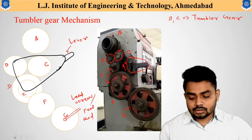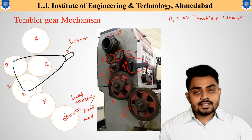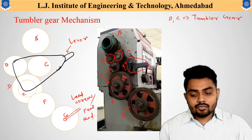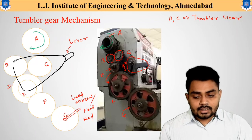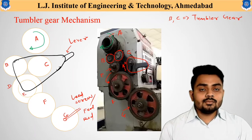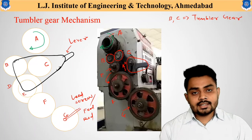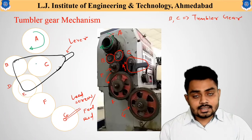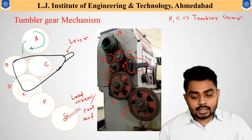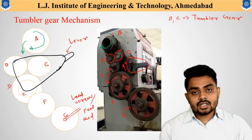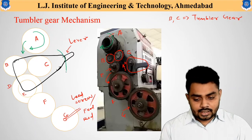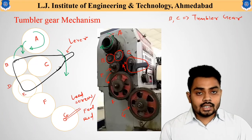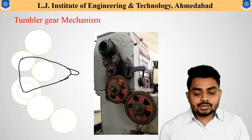When the workpiece rotates in the clockwise direction, gear A connected to the spindle also rotates clockwise. Gear B and gear C are in the disengaged condition, so motion from gear A cannot be transmitted to the lower gears. To transmit the motion, the lever is shifted in the downward direction, which connects gear B to gear A, establishing the connection between all the gears as shown in this figure.